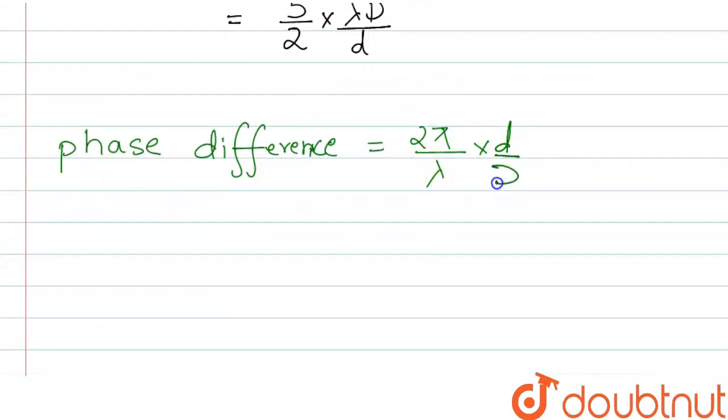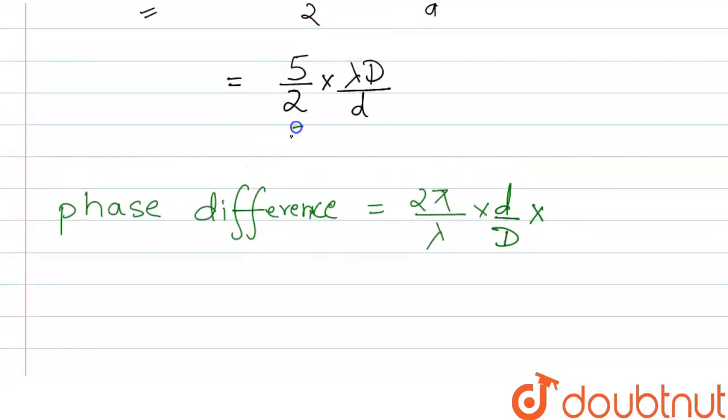So, here we see that d/D × 5/2 × λD/d. Here we see that small d both are cancelled out, capital D both are cancelled out, and also λ both are cancelled out.